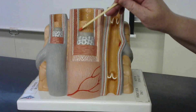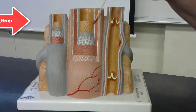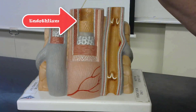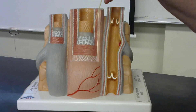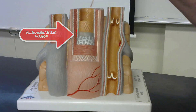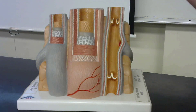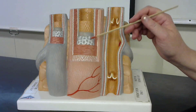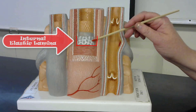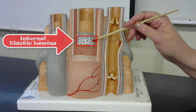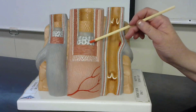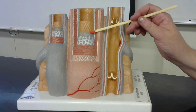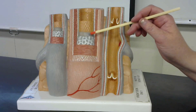In the arteries, the tunica intima is going to include this innermost layer of cells called the endothelium. The endothelium in both arteries and veins will be connected to the subendothelial layer. The tunica intima in arteries is also going to include an internal elastic lamina or layer. The internal elastic lamina is absent in the veins.